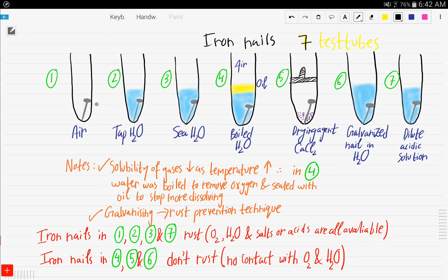In the second test tube, the nail is placed in tap water. In the third test tube, the nail is placed in seawater. In the fourth test tube, the nail is placed in boiled water which is sealed with a layer of oil. And in the fifth test tube, the iron nail is put in drying agent calcium chloride. And in the sixth test tube, the iron nail is galvanized. And in the seventh test tube, the iron nail is put in dilute acidic solution.